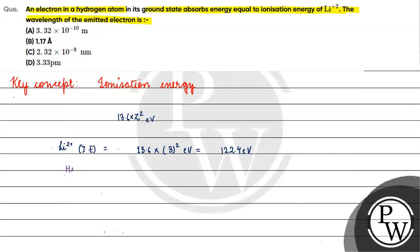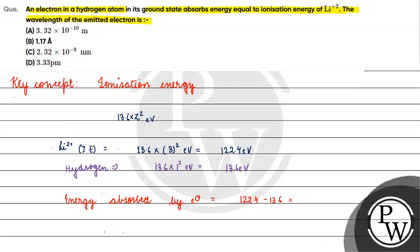If we talk about hydrogen, the energy in the ground state will be 13.6 × 1² = 13.6 electron volts. So the energy absorbed by the electron will be 122.4 minus 13.6, which is 108.8 electron volts.